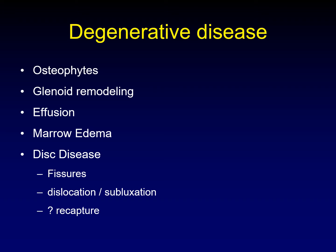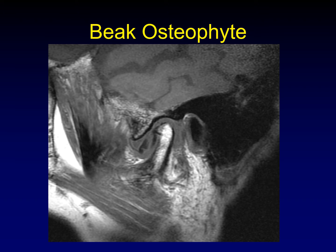The most common pathology affecting the TMJ is degenerative disease, including osteophytes, glenoid fossa remodeling, effusions, marrow edema, and disc disease such as fissures and dislocations. The most common osteophyte is the beak osteophyte, which extends from the anterior aspect of the condylar head, making it resemble a bird's head with a beak. Lateral and medial osteophytes can also occur, but the beak osteophyte is by far the most common.